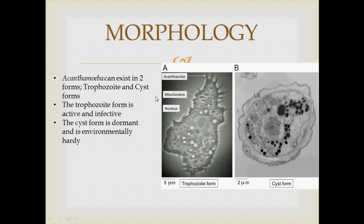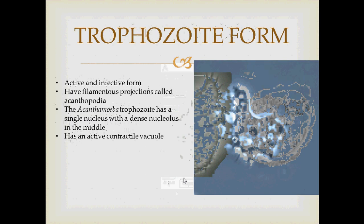Let's look at the morphology of Acanthamoeba. Acanthamoeba can exist in two forms: the trophozoite form and the cyst form. The trophozoite form is active and infective, whereas the cyst form is dormant and is environmentally hardy.